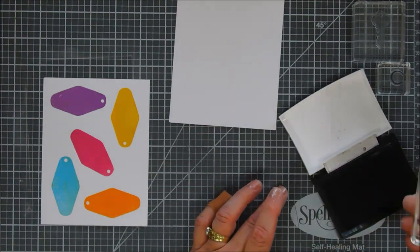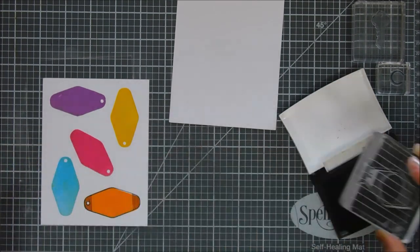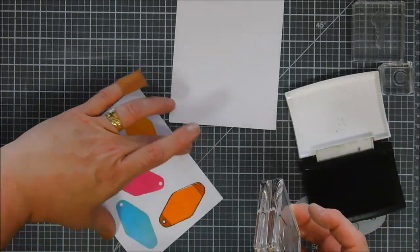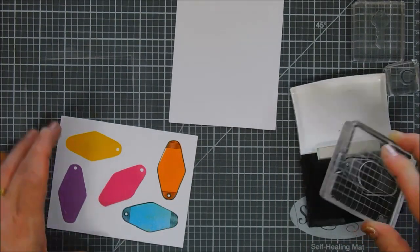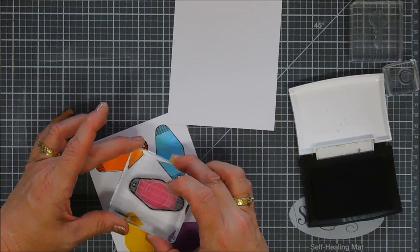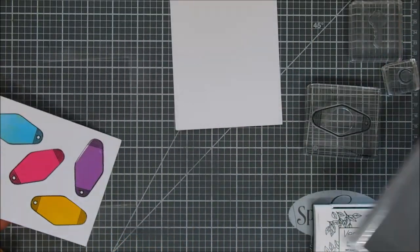Now this is the second layer for the top. I'm stamping over all of my backgrounds with my VersaFine Onyx Black ink. This ink stays sticky and when you have a sticky ink like this when you add silver or gold over the top it will stick to it.